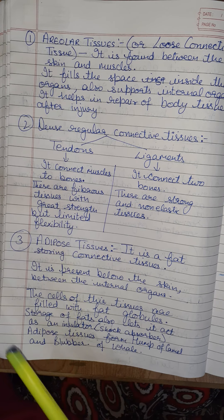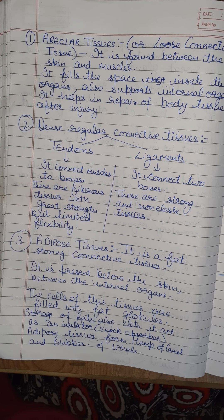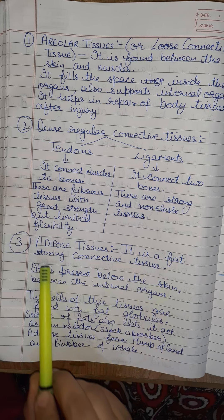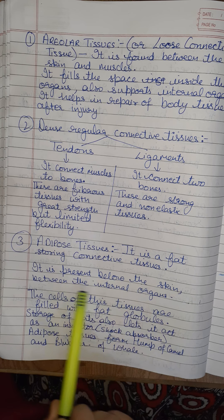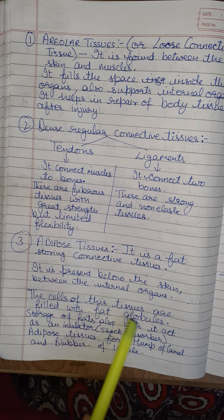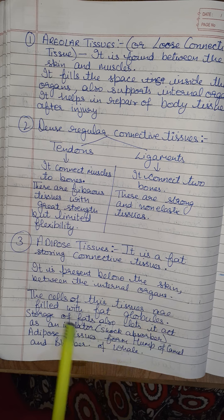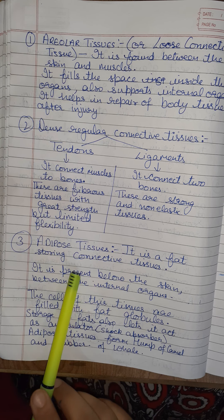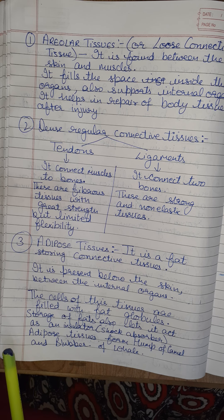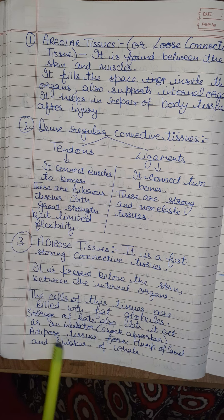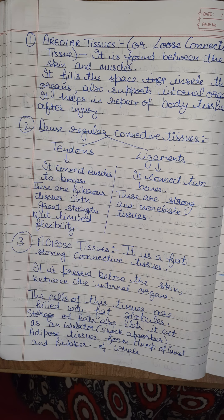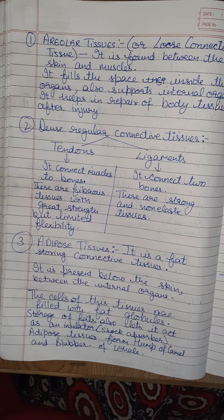Next is adipose tissue, which is a fat-storing connective tissue. The fat we see below our skin is due to adipose tissues. It is present below the skin and between the internal organs. The cells of adipose tissue are filled with fat globules. The storage of fat also lets it act as an insulator and shock absorber. Adipose tissue forms the hump of a camel and the blubber of a whale.